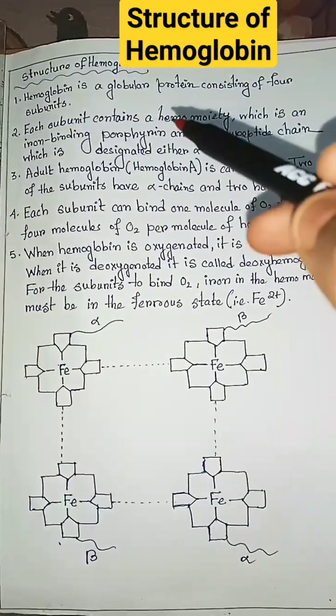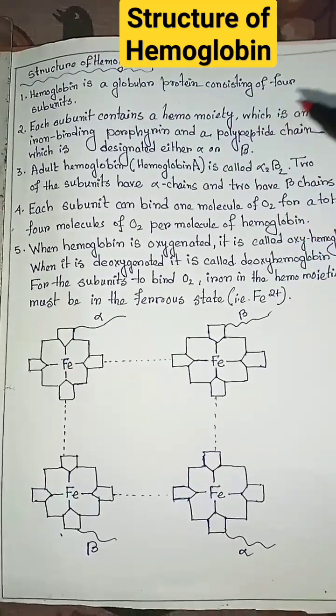Structure of hemoglobin. Hemoglobin is a globular protein consisting of four subunits.